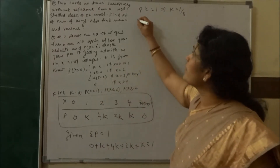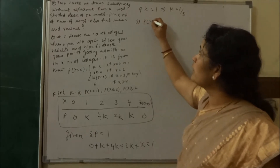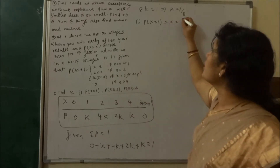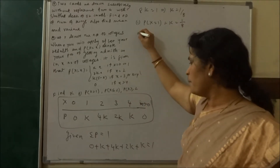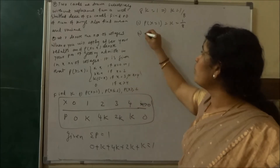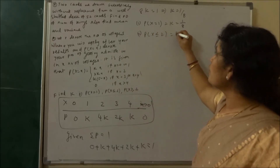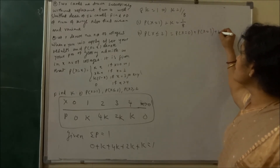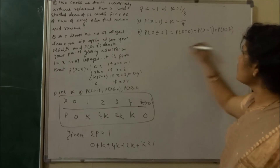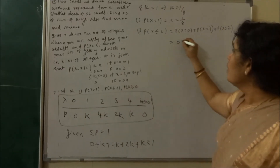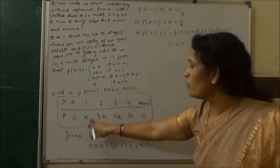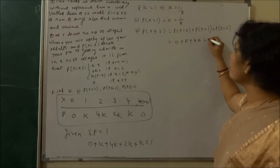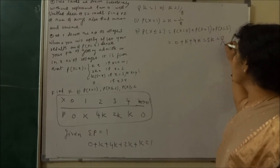Part 1: P(x = 1) = k = 1/8. Part 2: P(x ≤ 2) = P(x=0) + P(x=1) + P(x=2) = 0 + k + 4k = 5k = 5/8.